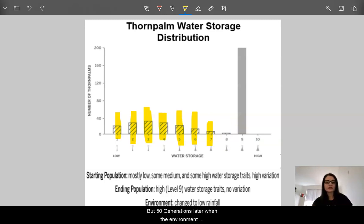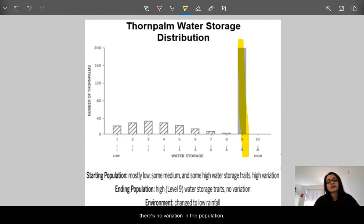But, 50 generations later, when the environment changed to low rainfall, all we see is just the trait for level 9 water storage, and there's no variation in the population.